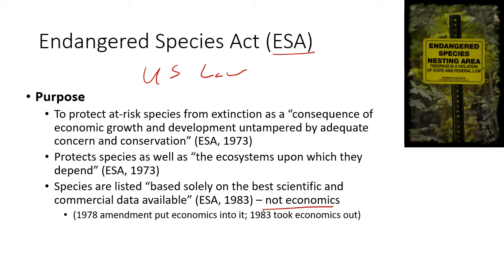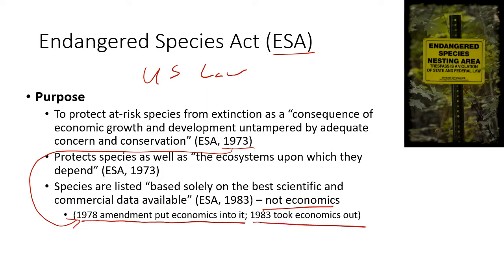Economics does not have a voice in the Endangered Species Act — whether a species is listed or not. The act was signed into law in 1973. Five years later, in 1978, economics was put into it — allowing that if it was in the financial interest of the country to harvest a species to extinction, it could be done and that species wouldn't be listed. Then in 1983, they took that out. So economics does not have a voice in the Endangered Species Act.